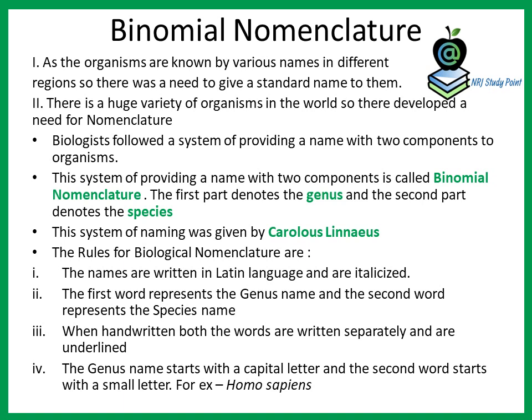Now the question arises: what is the need for nomenclature? There are millions of organisms found in the world, and all these organisms are known by different vernacular names in different parts of the world. Therefore there is a need to standardize the naming — to provide a specific or standard name so that they can be studied easily and to prevent confusion. Scientists have provided names on the basis of a system called the binomial system of nomenclature.